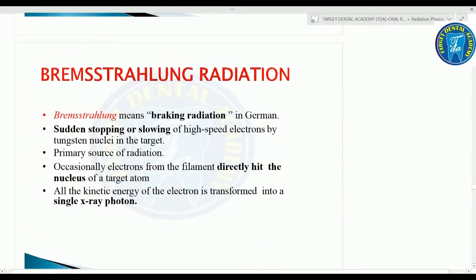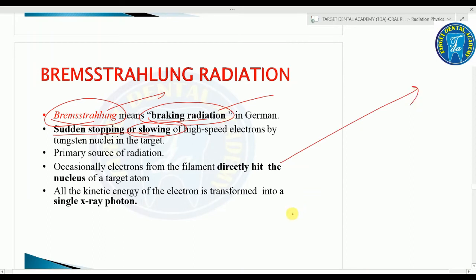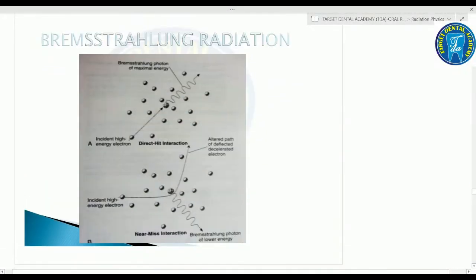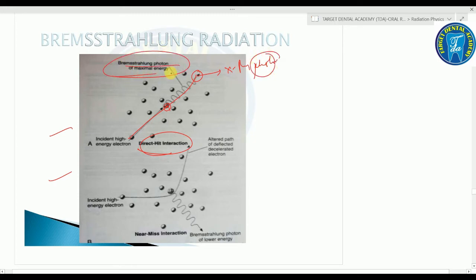Bremsstrahlung — from the German meaning 'braking radiation' — involves the sudden stopping or slowing of high-speed electrons by the tungsten nuclei in the target. It is the primary or major source of radiation. Two situations: first, a direct hit — if a high-speed electron directly hits the nucleus of the target atom, all its kinetic energy is transformed into a single X-ray photon, which is the Bremsstrahlung photon of maximal energy.